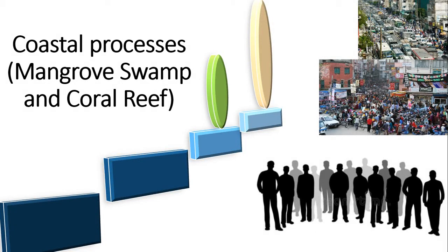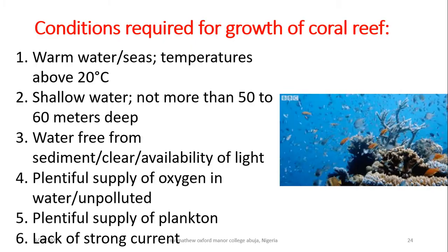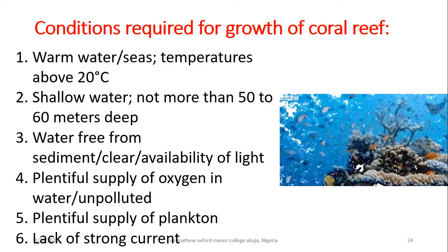Welcome to part two of this lesson. We've been able to cover erosional processes, transportational processes, and also coastal landforms. For part two of this lesson, we'll be looking at mangrove swamps and coral reefs in line with your IGCSE geography syllabus. The first thing to cover is the conditions required for growth of a coral reef.